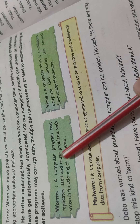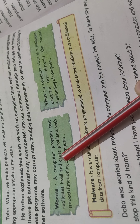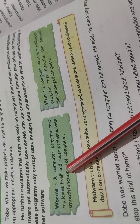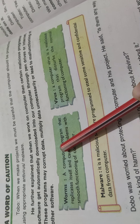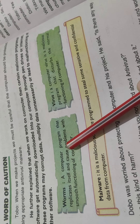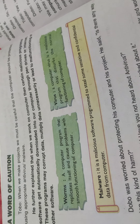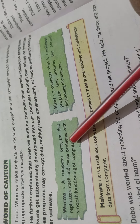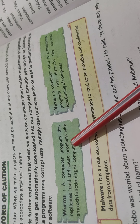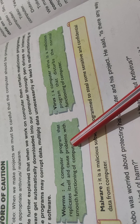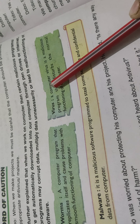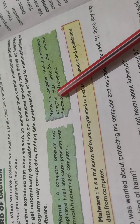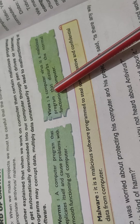A worm is a computer program that replicates itself and causes problems with the smooth functioning of a computer. A virus is a malicious program that disturbs the normal functioning of a computer.